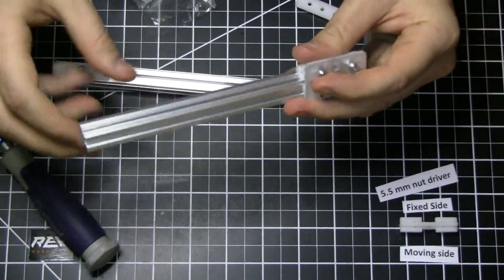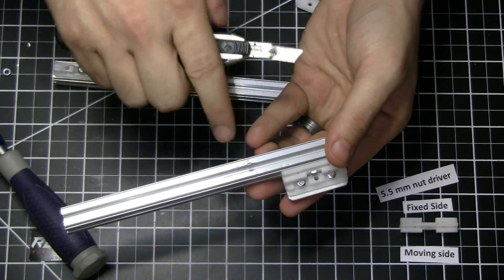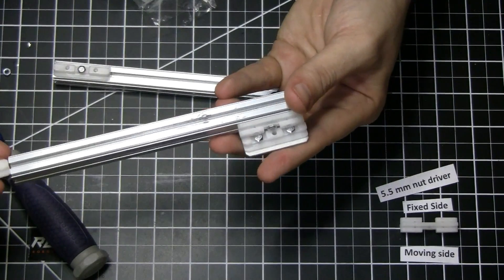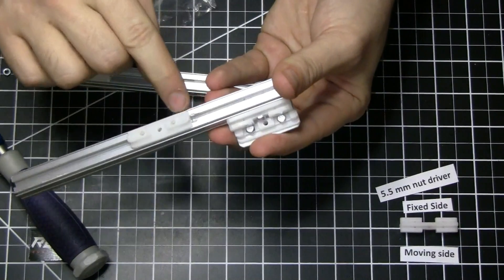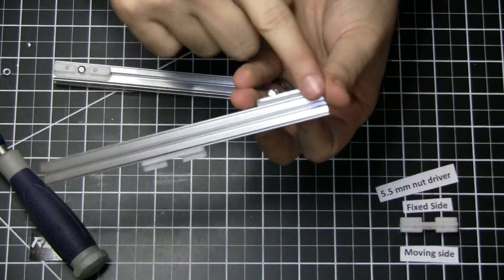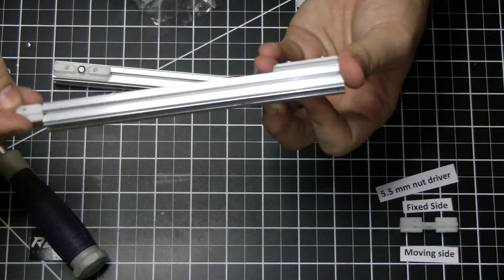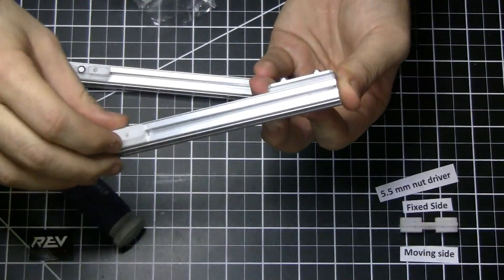First of all you want to make sure that you don't have any nicks or dents on your extrusion. This might inhibit the sliders from moving. This can happen if bolts are over tightened when you're using it for other things. So try to pick a side that's nice and smooth. You should be able to run your plastic parts through without very much resistance and that's how you know you have a good side.